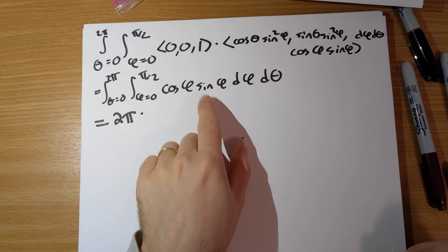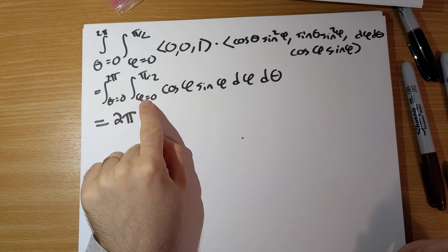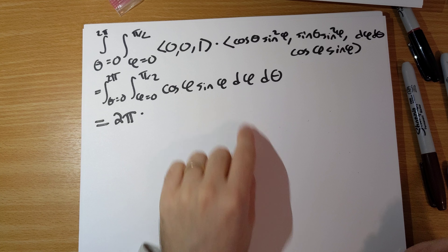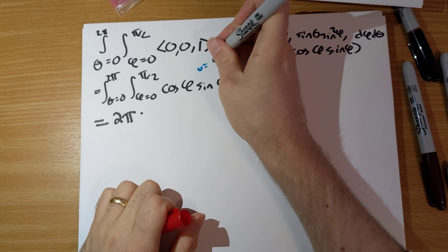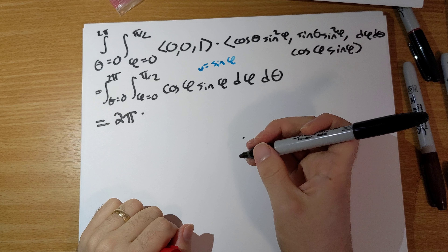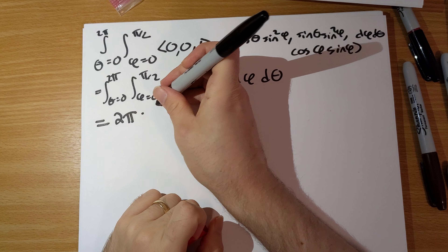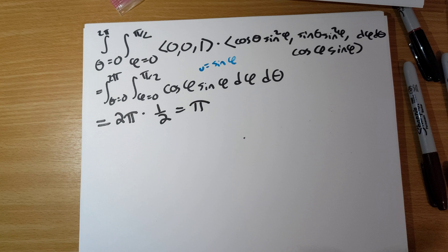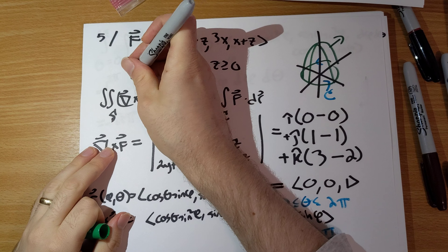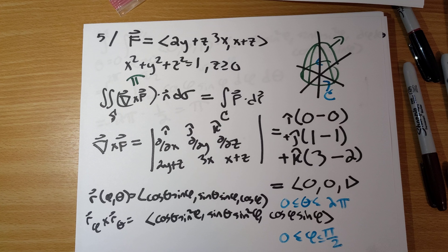Integrating cos φ sin φ from φ = 0 to π/2, we can substitute u = sin φ, so du = cos φ dφ, which gives 1/2. Therefore the surface integral equals 2π × (1/2) = π.